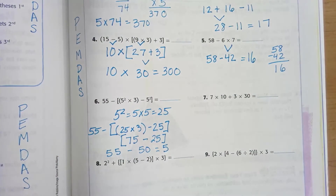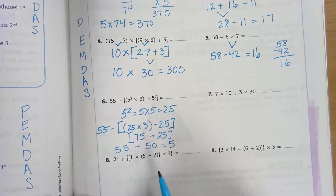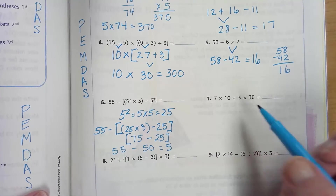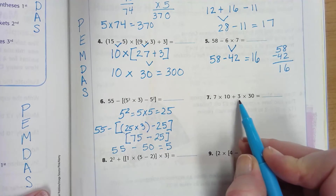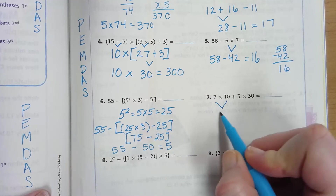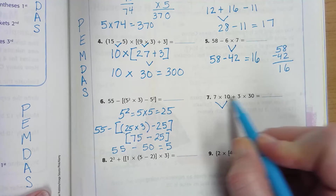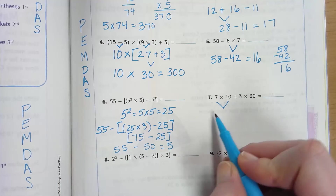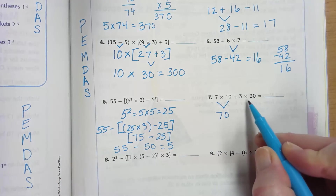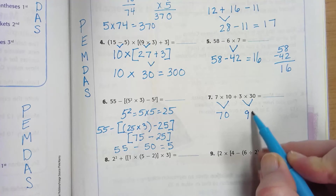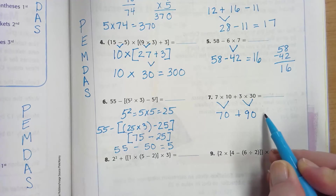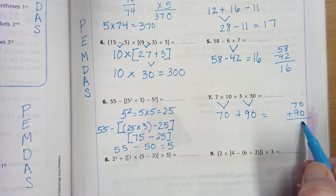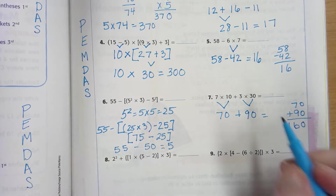Don't try to do these problems without showing your thinking. Number 7: 7 times 10 plus 7 times 30. Multiply before adding — do each part: 7 times 10 is 70, 7 times 30 is 90. Wait — that should be 3 times 30 is 90. Add the two together: 70 plus 90 is 160.